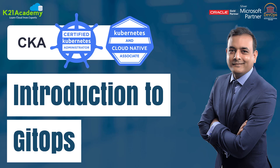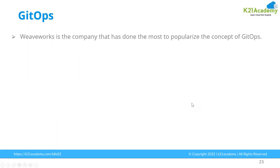Hello everyone, welcome back to another session by K21 Academy. Today our expert will be discussing the introduction to GitOps. GitOps right now is one of the most common buzzwords. GitOps basically is an operational framework that takes DevOps best practices used for application deployment, such as version control systems, collaboration, compliance, and CI/CD.